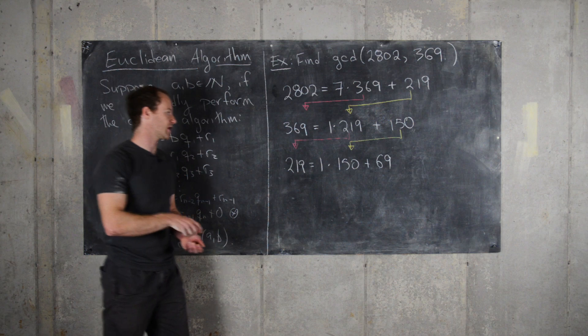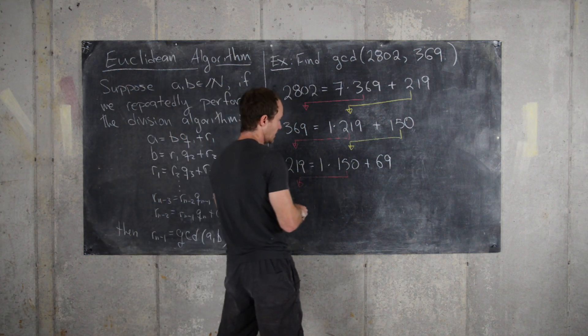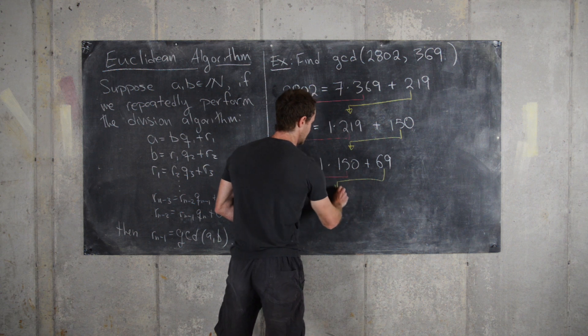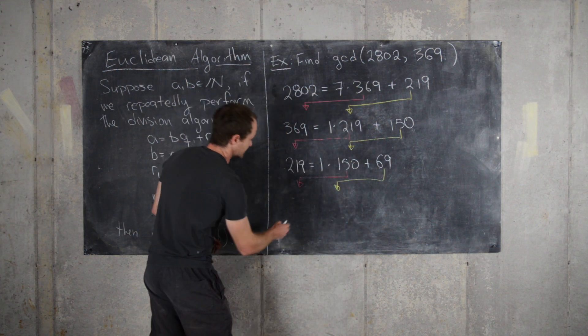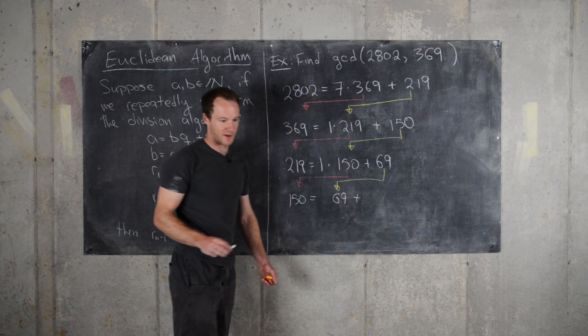Okay, good. Now let's keep going. So 150 moves down here and 69 moves down here. So we get 150 equals something times 69 plus a remainder.